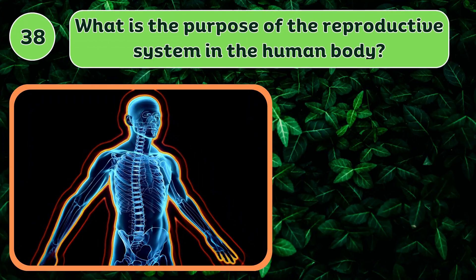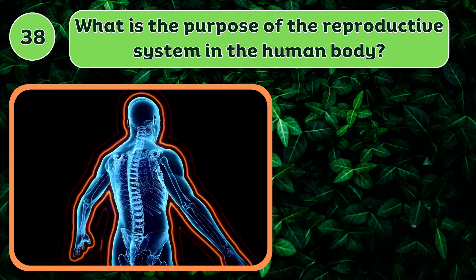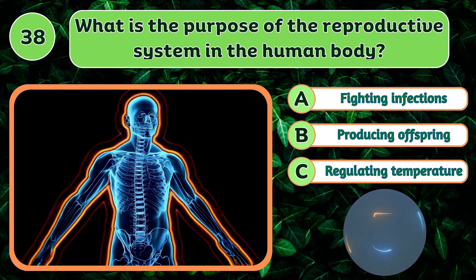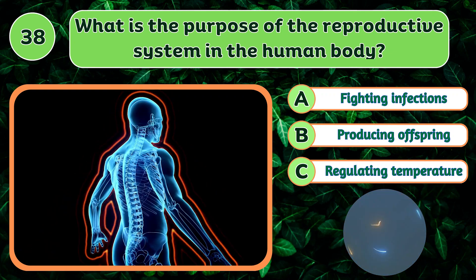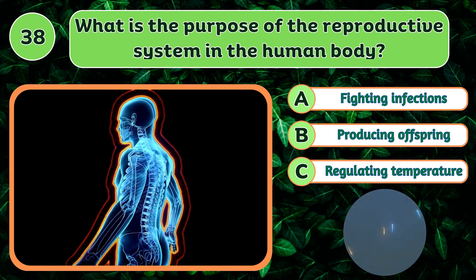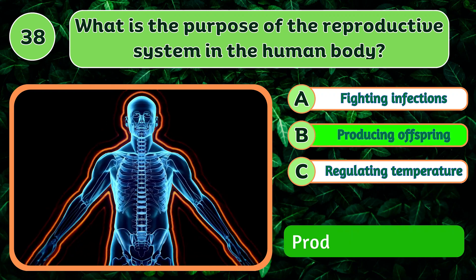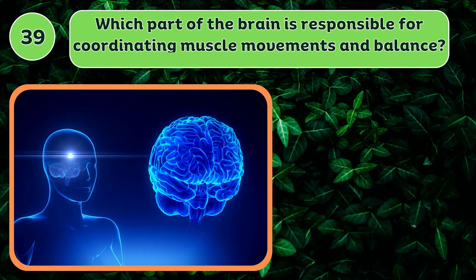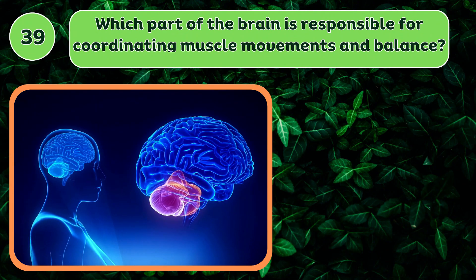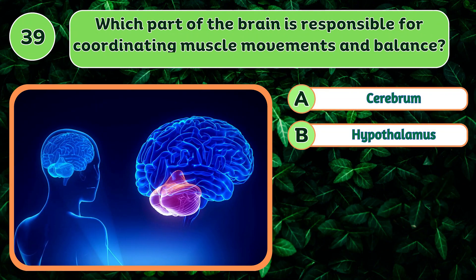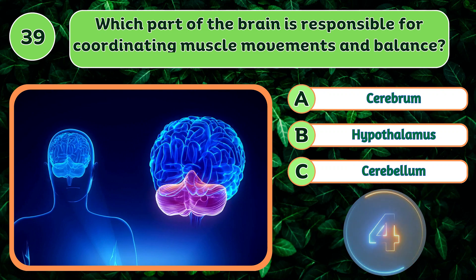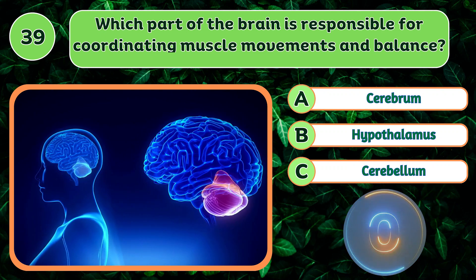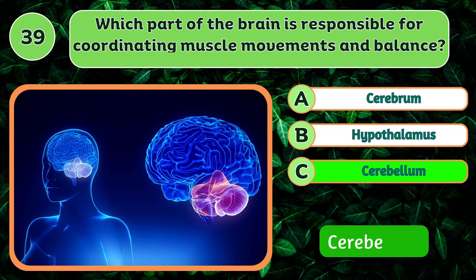What is the purpose of the reproductive system in the human body? Producing offspring. Which part of the brain is responsible for coordinating muscle movements and balance? Cerebellum.